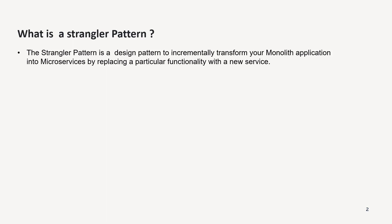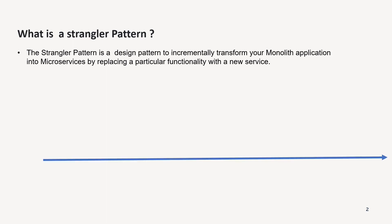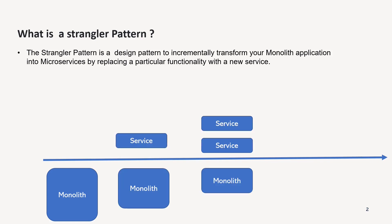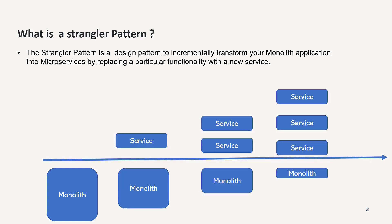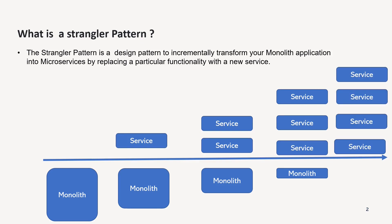But over time, the monolithic application disappears and you get the fully functional microservices-based application. If you look at this diagram, you can see a big monolithic application. When you apply the Strangler Pattern, it's going to shrink and you get more and more services over time. Eventually, you will have just a microservices-based application and you get rid of the monolithic application.